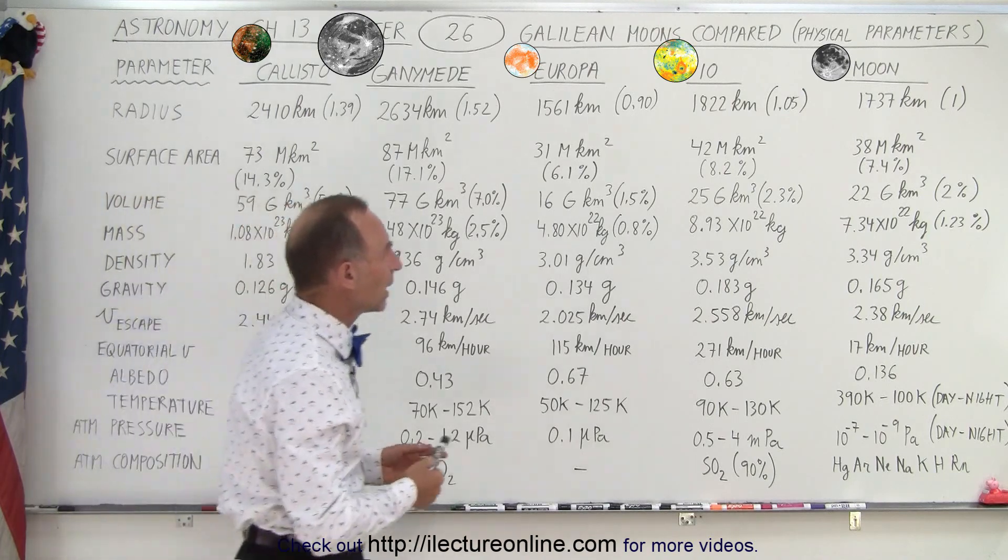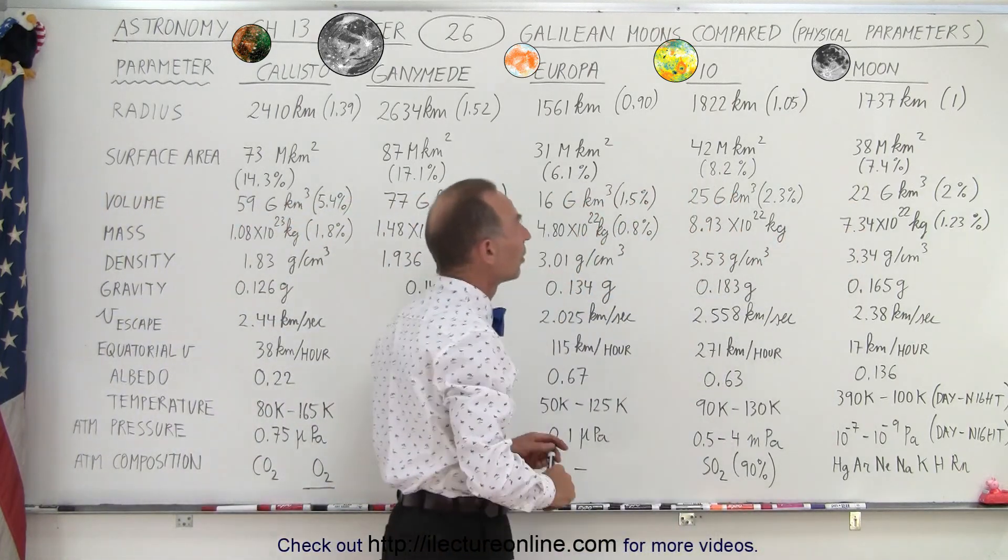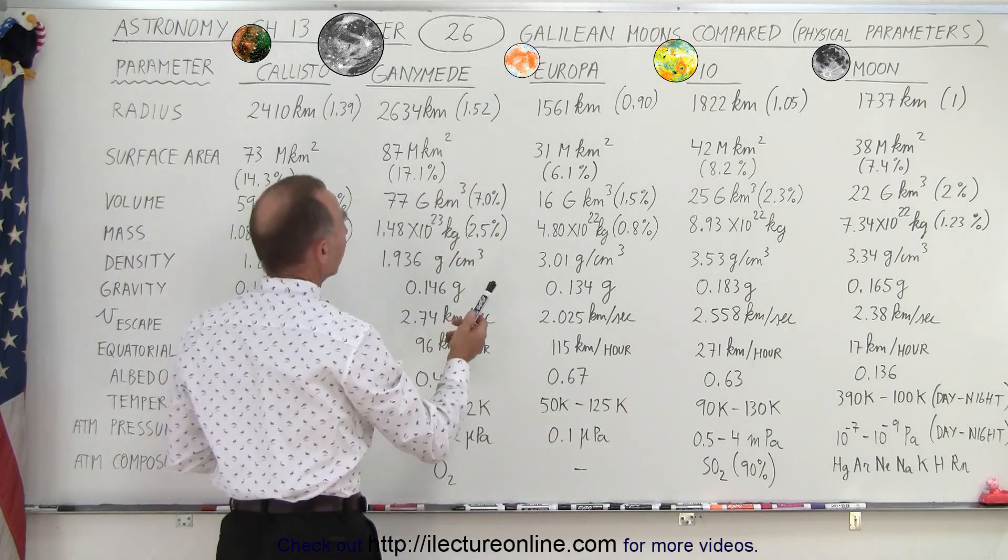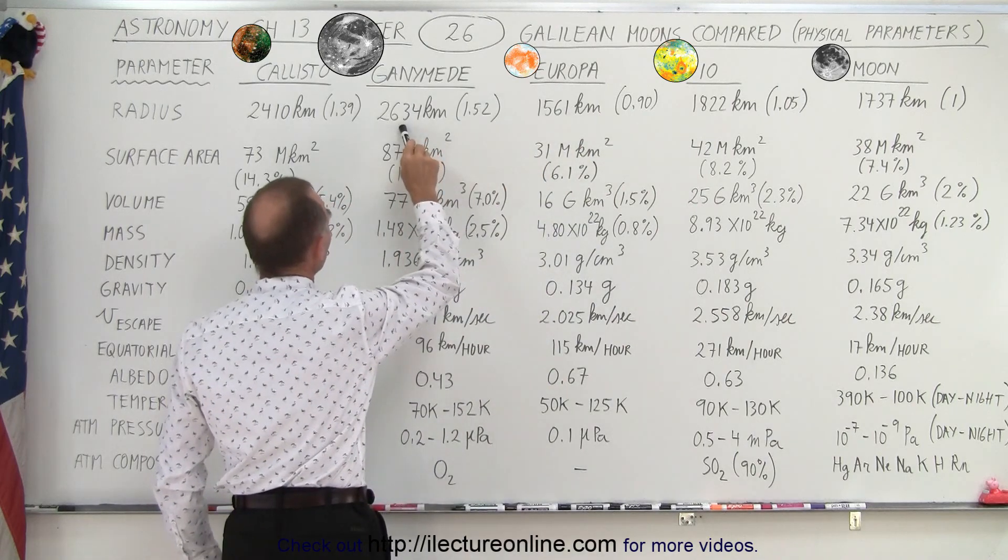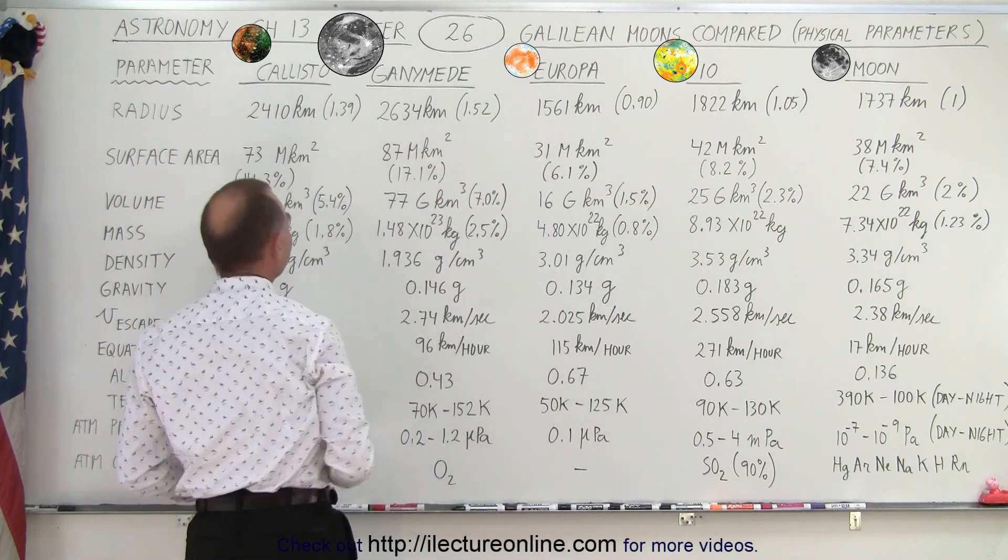Notice the moon's radius is 1737 kilometers and if we compare that to the four Galilean moons it's very similar: 1822, 1561, 2634, and 2410.